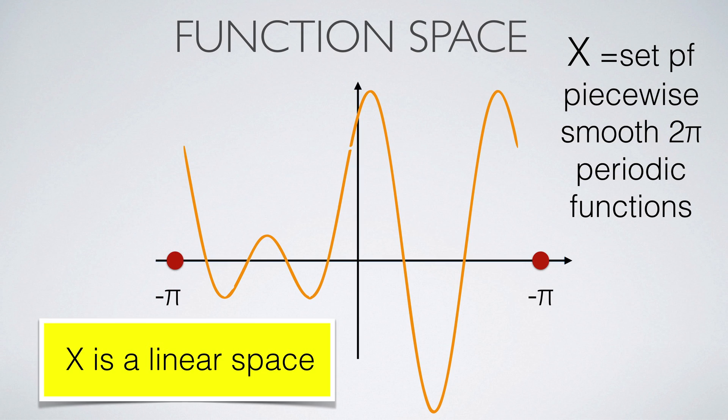We work in the linear space x of all piecewise smooth 2π periodic functions. Indeed, we can add functions in x, scale functions in x, and have the zero function in x.